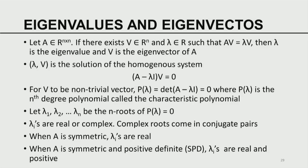Here, the system matrix is A minus lambda I. The determinant of A minus lambda I must be zero. The elements of A are known, elements of I are known, and lambda is a variable. So it becomes a polynomial of degree n. This polynomial P(lambda), which is the determinant of A minus lambda I, is called the characteristic polynomial.